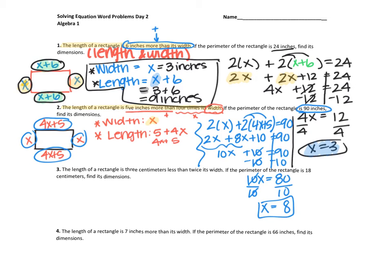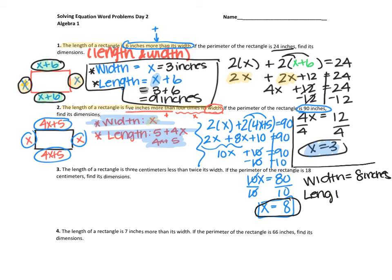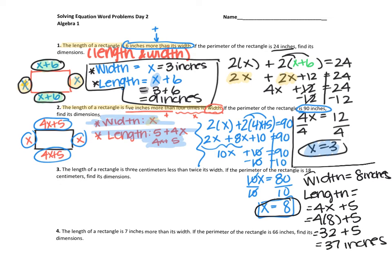But remember, that's not my final answer — I have to answer the question. It wants to know the dimensions, so I need to find the width and the length. For the width, it said the width is whatever X is, so the width is eight inches. To get my length, I know my length is four X plus five, so that means four times eight plus five. Four times eight is 32, and 32 plus five means my length is 37 inches. So my answer is a width of eight inches and a length of 37 inches.